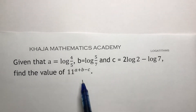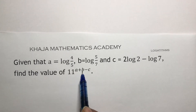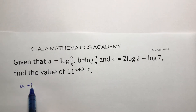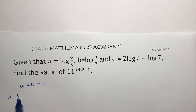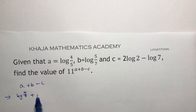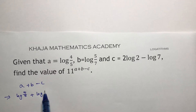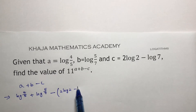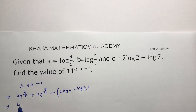First, I'll calculate the value of a + b - c. So a + b - c: the value of a is log(4/5), plus b which is log(5/7), minus c which is 2log2 minus log7.